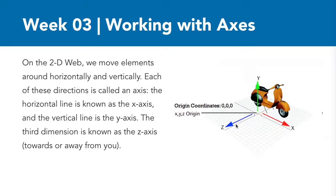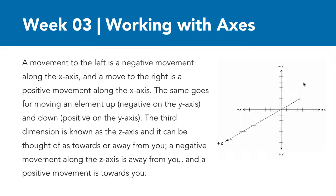The z-axis is the dimension that comes towards you. When we move things in 3D space, moving something to the left is a negative movement on the x-axis, represented by a negative number. Moving something to the right uses a positive number, indicating positive movement along the x-axis. The same is true for the y-axis: moving an element up uses a negative number, and moving it down uses a positive number. The z-axis uses positive values when an element comes towards you, and negative values when it goes away from you.